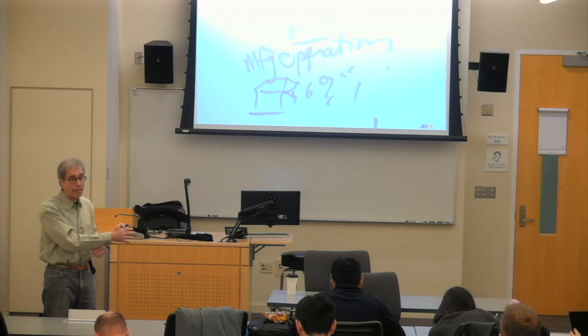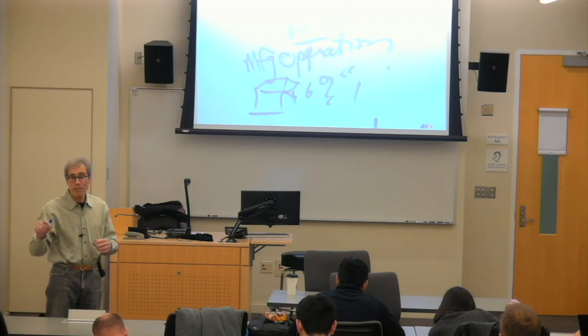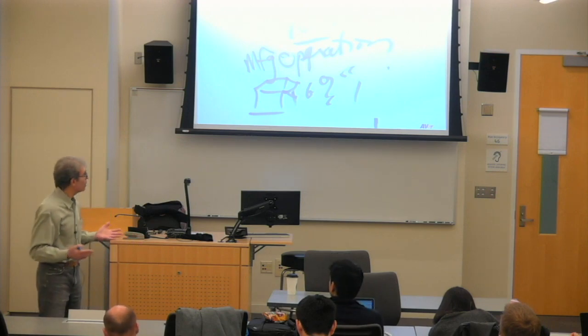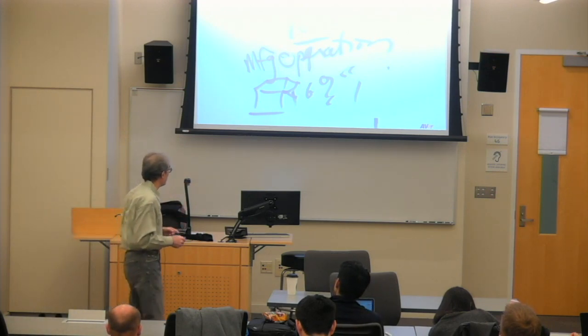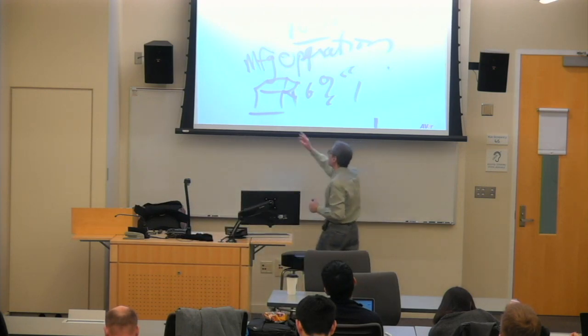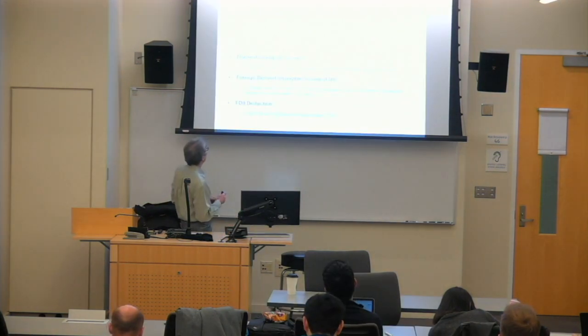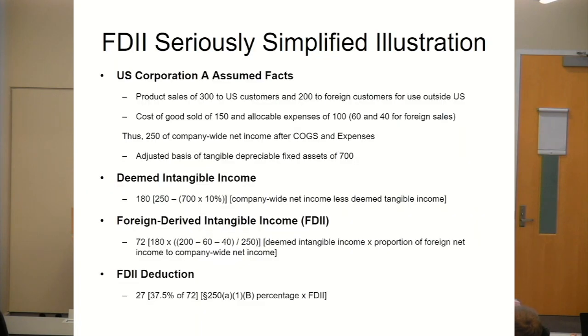It's just a sledgehammer approach, a bright line calculation, to come up with a number. If after subtracting off the 10%, notice in the example, adjusted basis of tangible depreciable fixed assets was 700. 700 times 10%, last time I looked, was 70. So we subtract 70 from the 250 of income and we get 180. Simple, bright line approach.